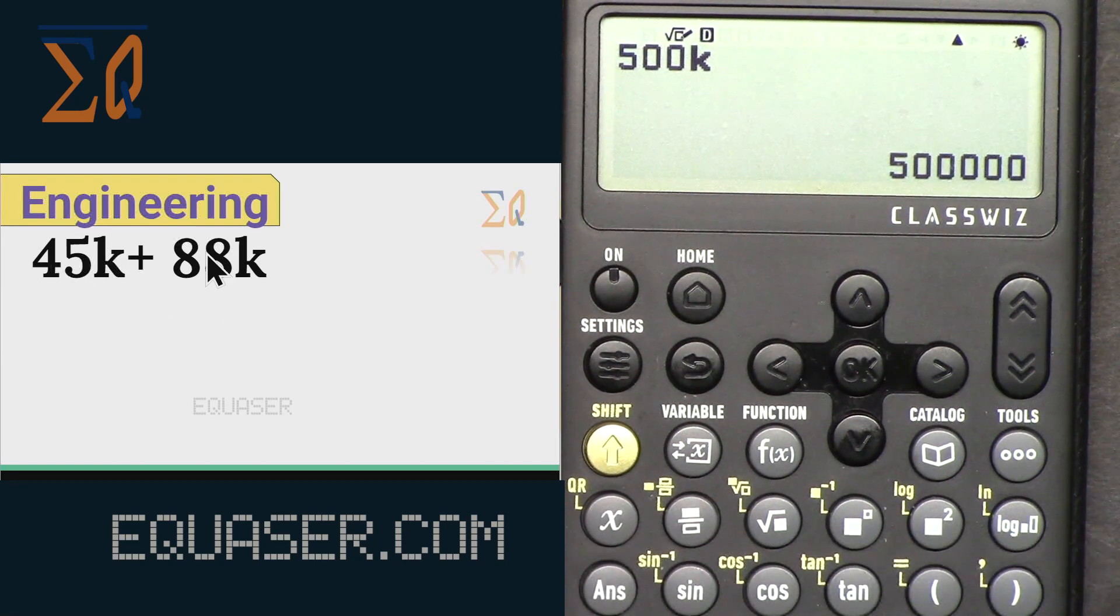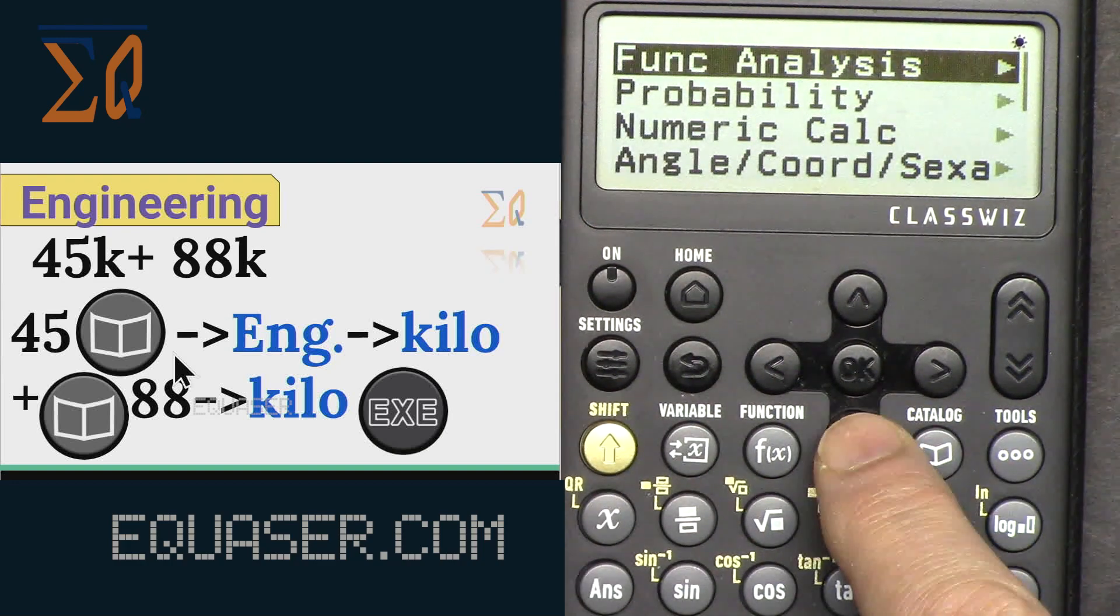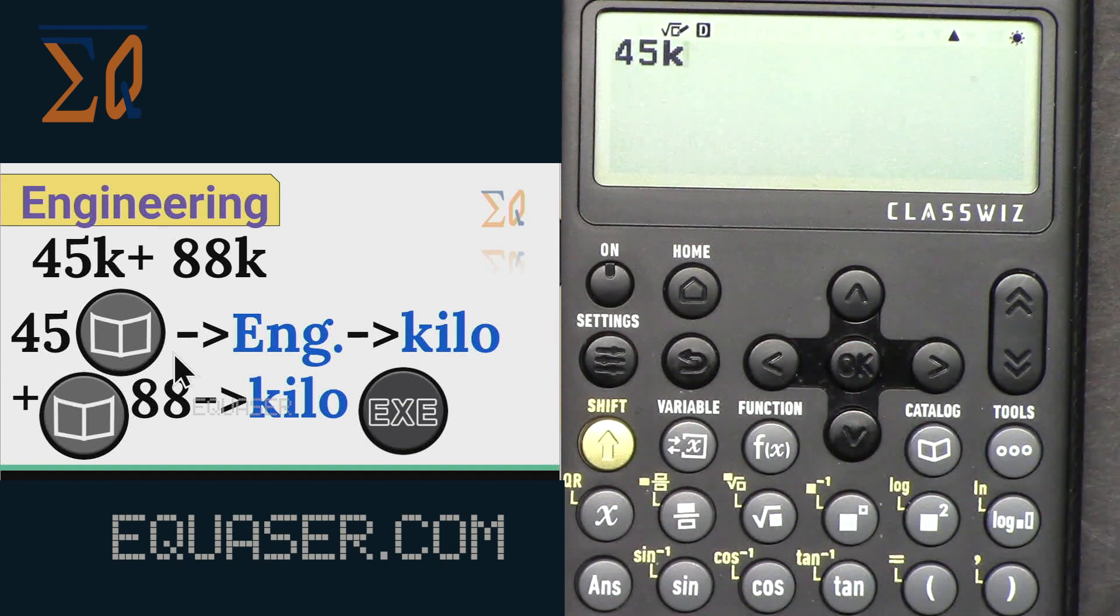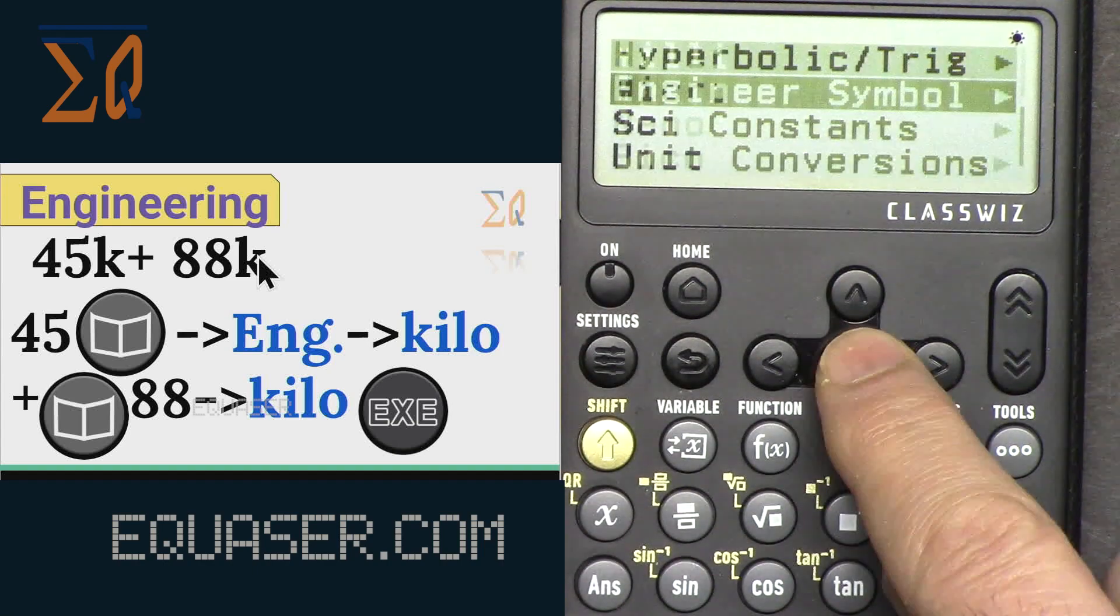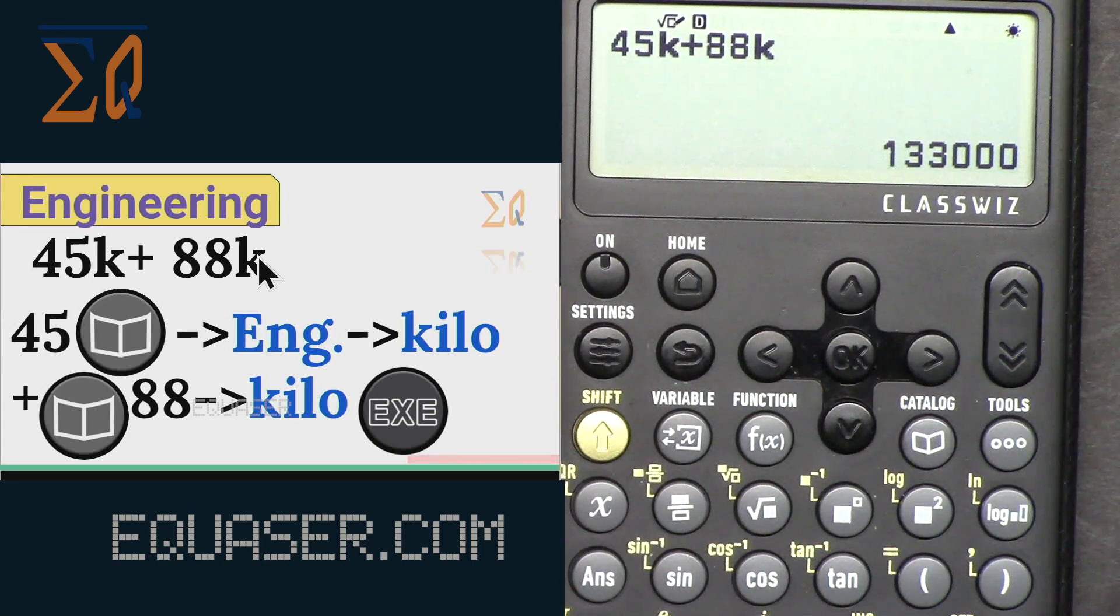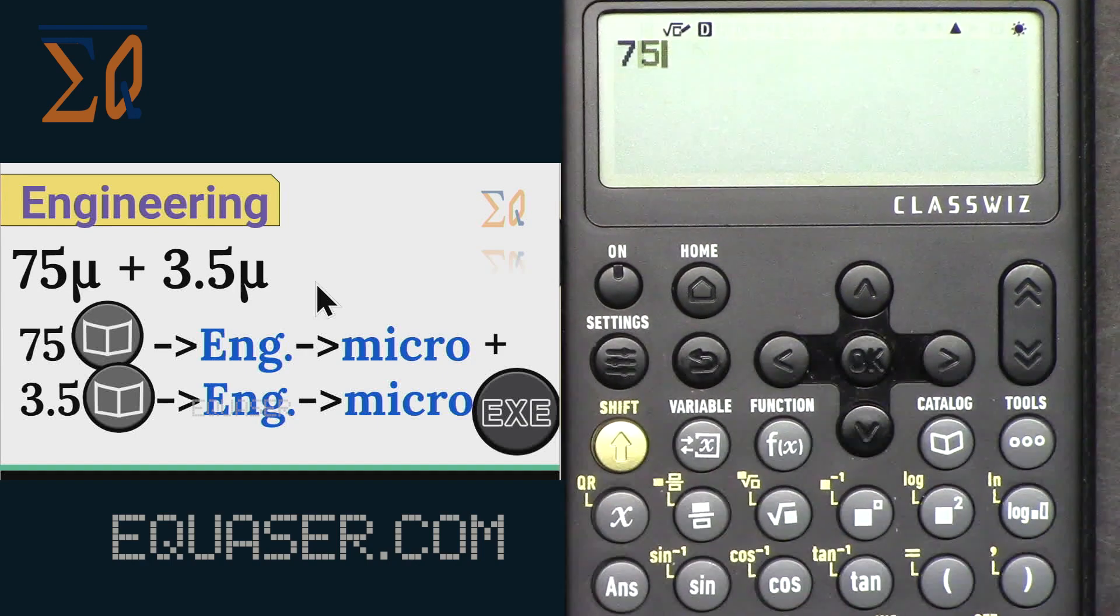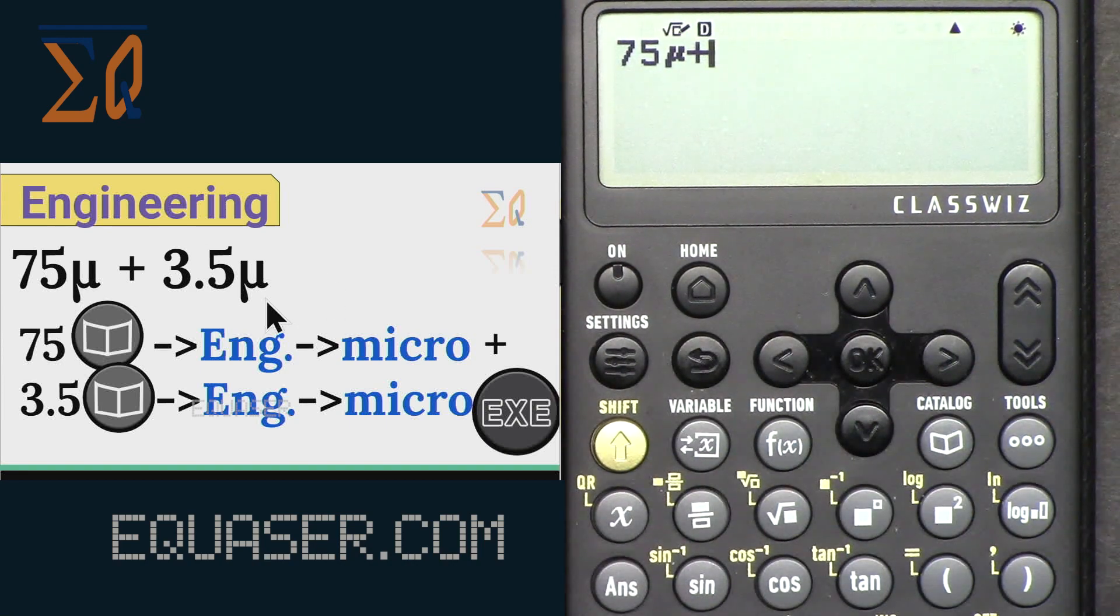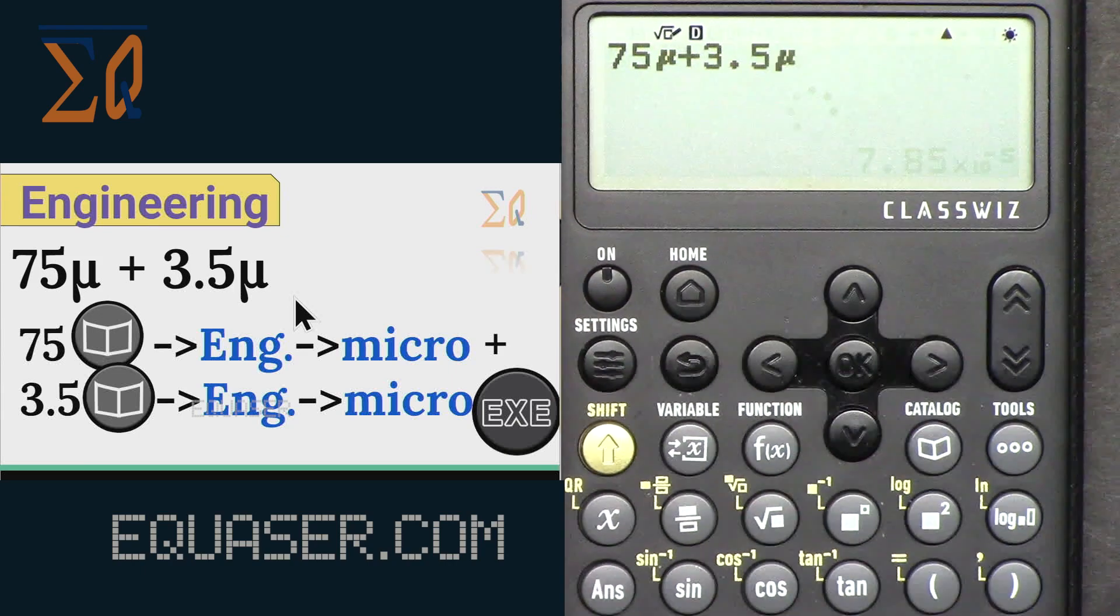Like that, equal, and that's the value. You can do also 75 micro plus 3.5 micro. Let's say 75 and then catalog, go to engineering micro, plus 3.5 micro, go to engineering micro, like that, and that's the answer.